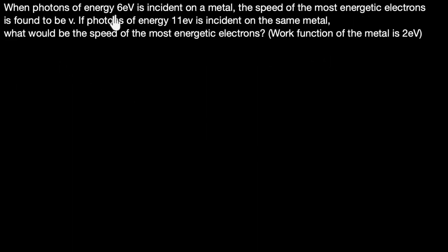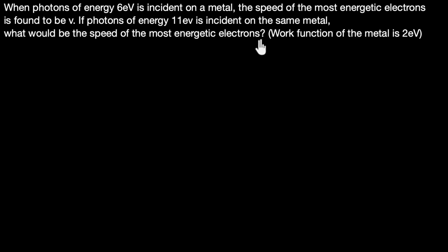Let's try another one. When photons of energy 6 electron volts are incident on a metal, the speed of the most energetic electrons is found to be V. If photons of energy 11 electron volts are incident on the same metal, what would be the speed of the most energetic electrons? We are given the work function. It's a very similar question to the previous one, so pause and try it yourself first.